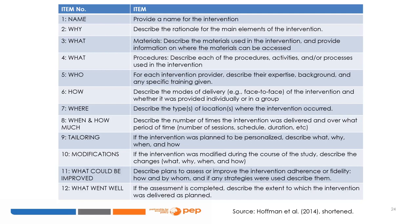This checklist can be used to assess if the intervention description is complete. 1. Provide a name for the intervention. 2. Why? Describe the rationale for the main elements. 3. What? Materials — describe the materials used and where they can be accessed. 4. What? Procedures — describe each of the procedures, activities, and processes used. 5. Who? For each intervention provider, describe their expertise, background, and any specific training given. 6. How? Describe the modes of delivery — for example, face to face — and whether it was provided individually or in a group.